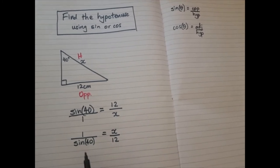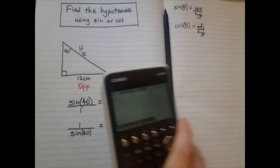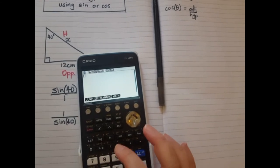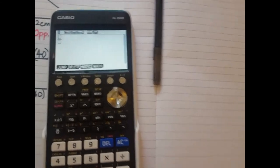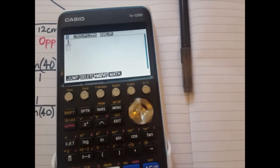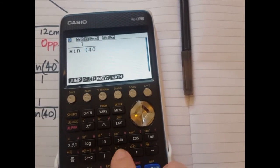Now 1 over sin 40, we're going to work that out on our calculator. Here we go. On my calculator, I'm going to use the fraction button. So here's the fraction. 1 goes on top, and sin 40 goes on the bottom like this.